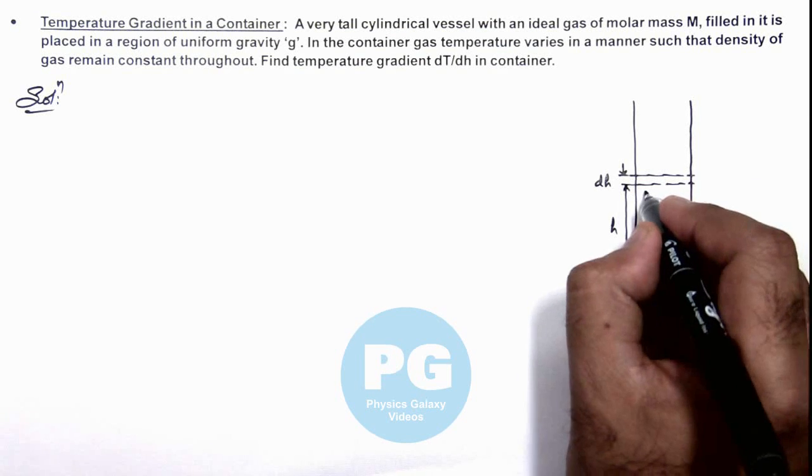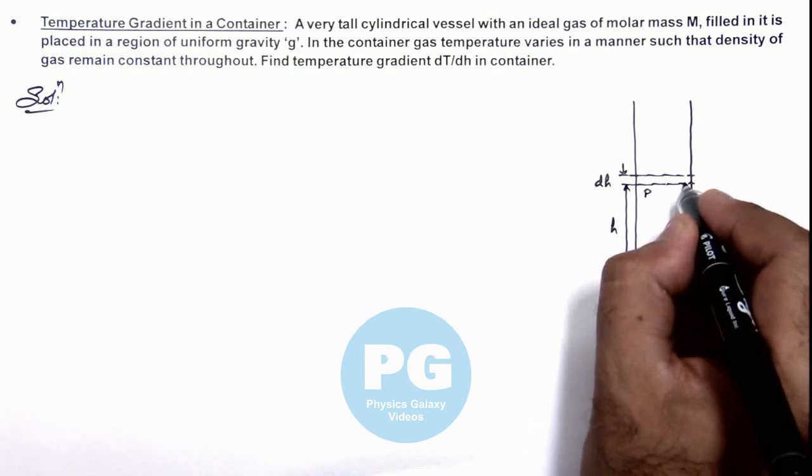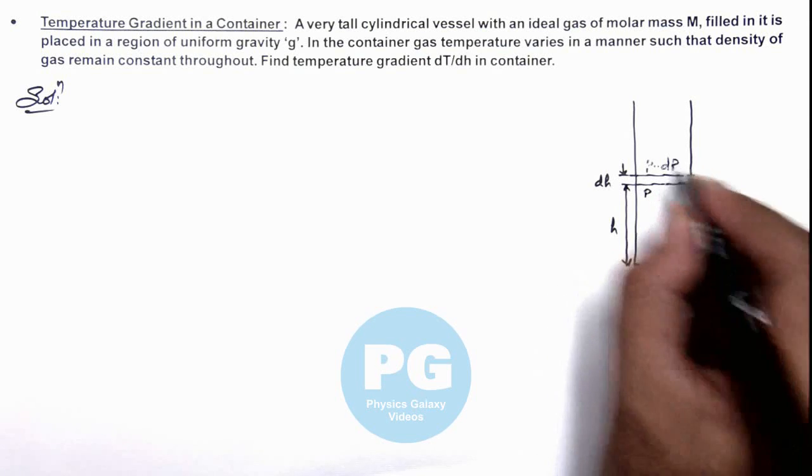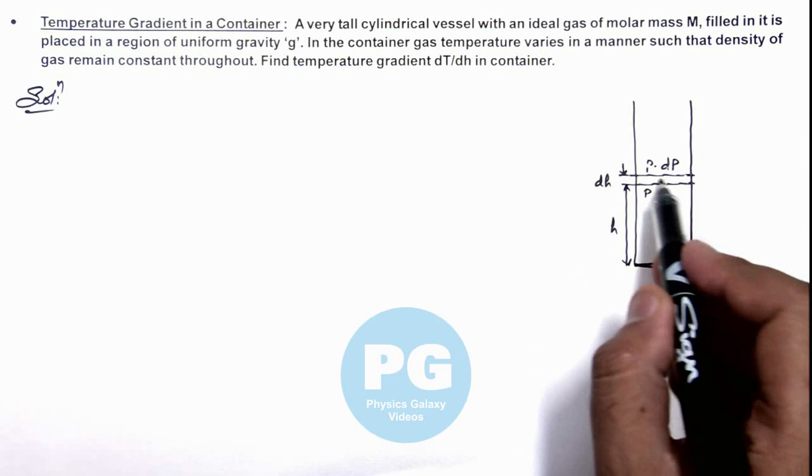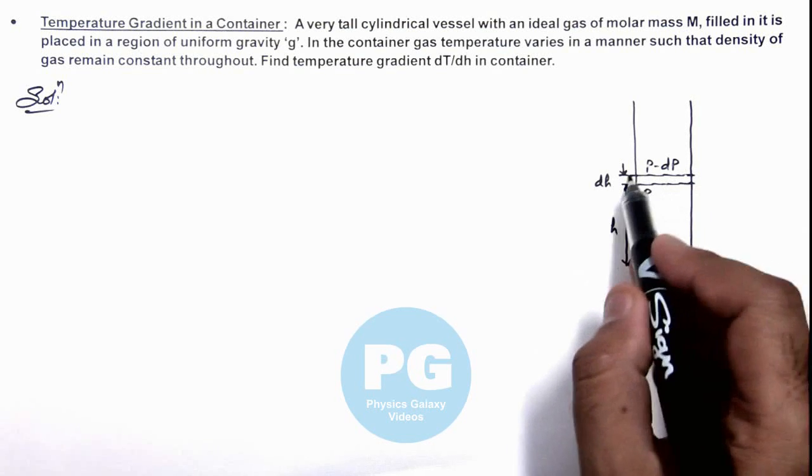So obviously, if pressure below this layer is p, then above it'll be p minus dp, and dp is the drop in pressure due to the weight of this elemental layer of width dh.